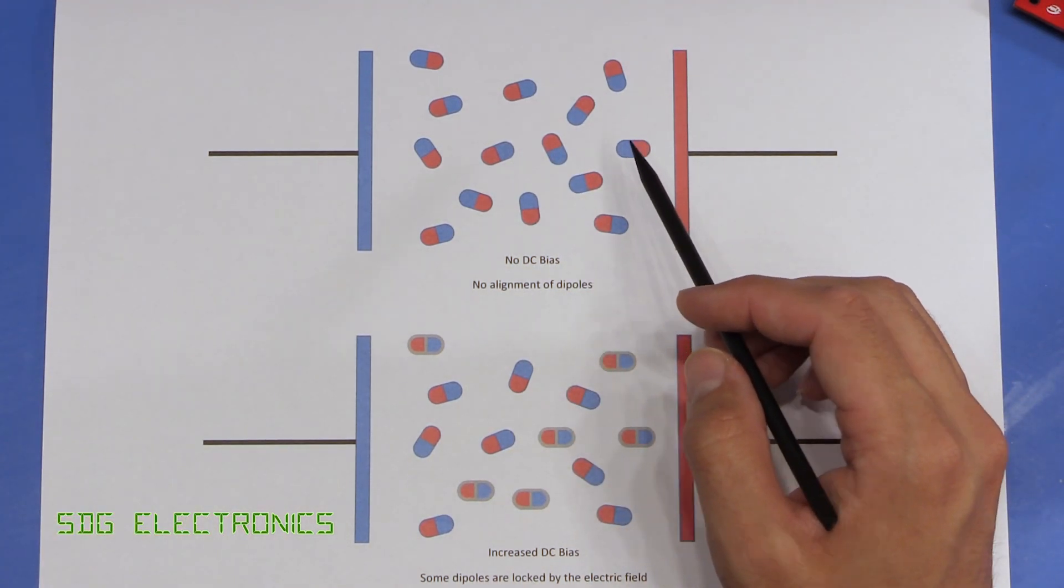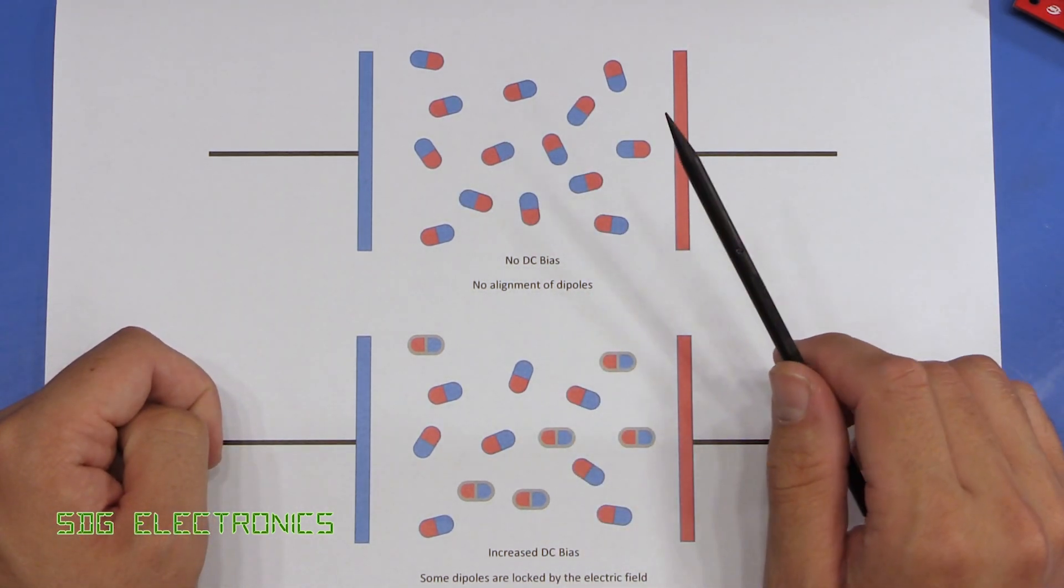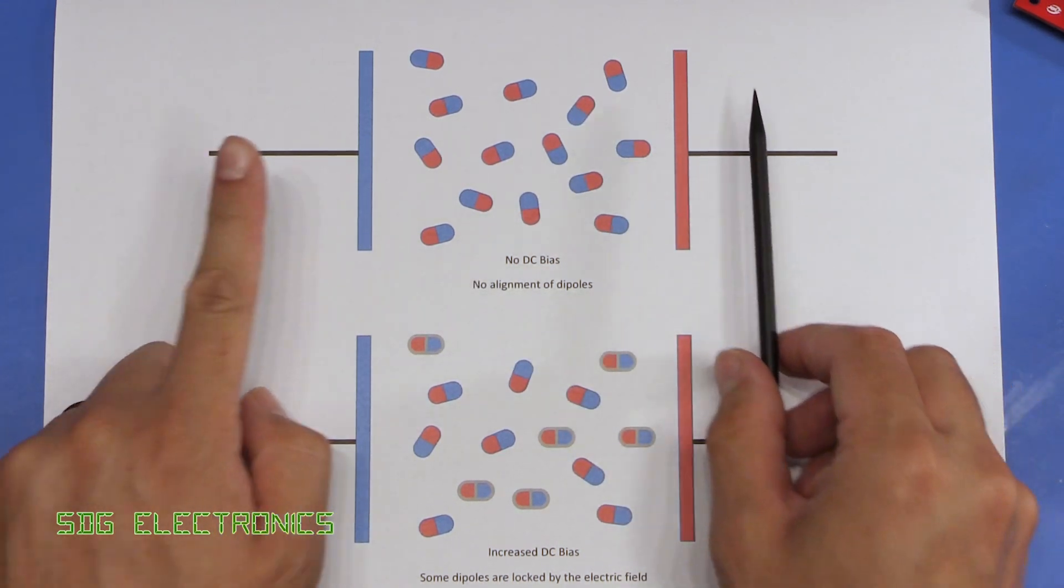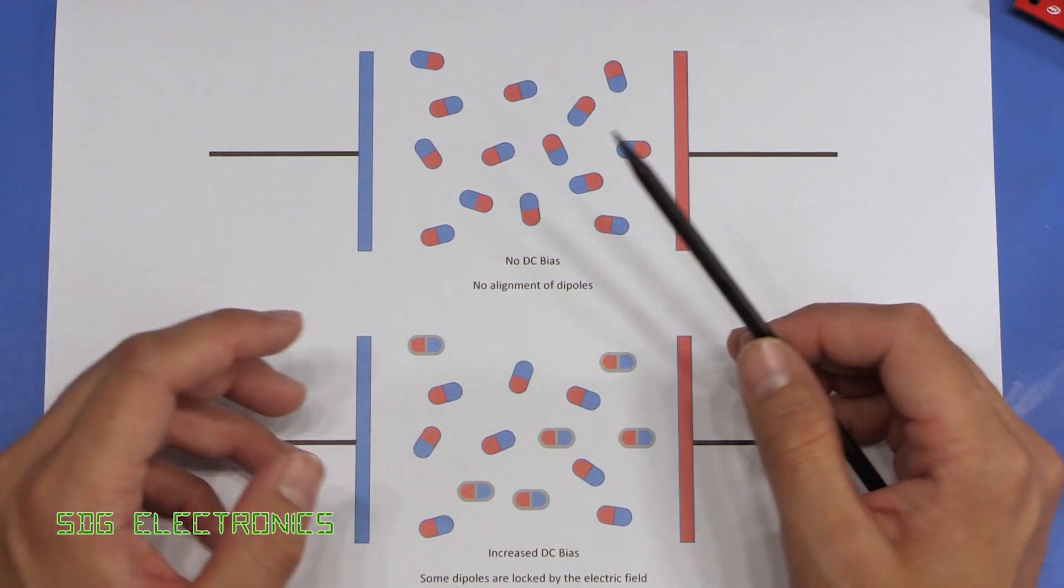Well the dielectric material within MLCC capacitors is derived from barium titanate, and as the voltage on these plates is increased, the molecular shape of the barium titanate molecule shifts, resulting in a polarity of the dipoles in the capacitor structure.